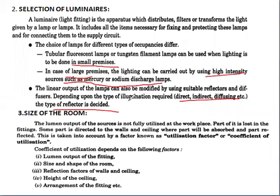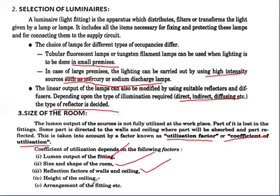Regarding the size of the room: the lumen output of the sources is not fully utilized at the workplace. Part of it is lost in the fitting, some part is directed to the walls and ceiling where part will be absorbed and part reflected. This is taken into account by a factor known as the utilization factor or coefficient of utilization. The coefficient of utilization depends upon: lumen output of the fitting, size and shape of the room, reflection factors of walls and ceiling, height of the ceiling, and arrangement of the fittings.